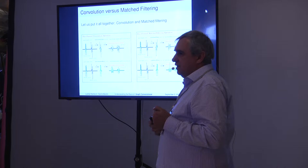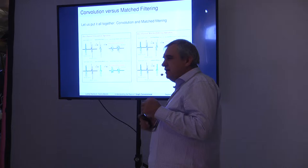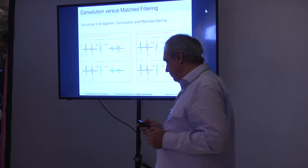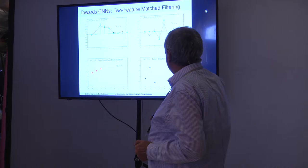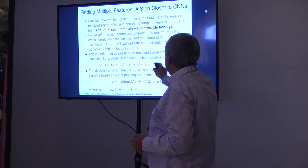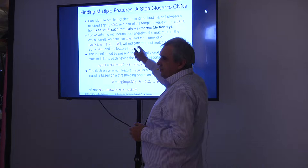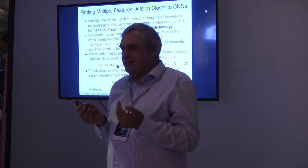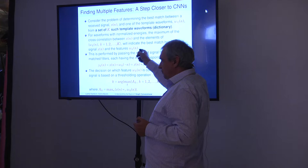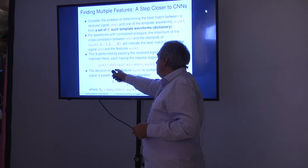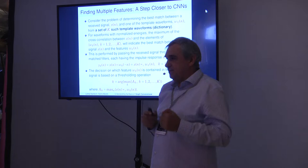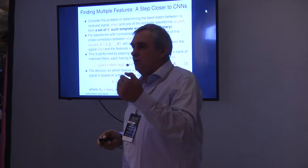Knowing that convolutional neural networks perform match filtering, we can now easily explain several of the most common operations. If we have more than one feature to look for and want to detect which one exists, we should make a set of features — exactly what is done in convolutional neural networks — and find the output for the given input with each of the kernels. By detecting the maxima, we give an answer as to which of these features existed in the input signal.